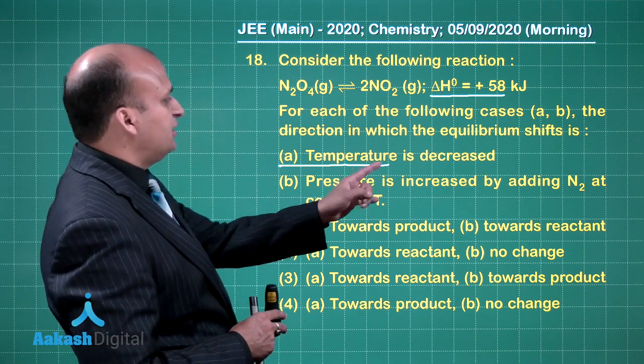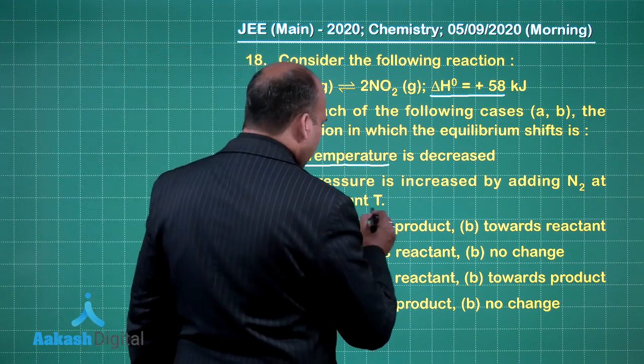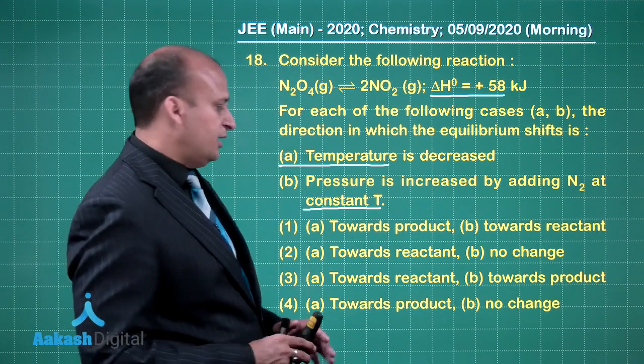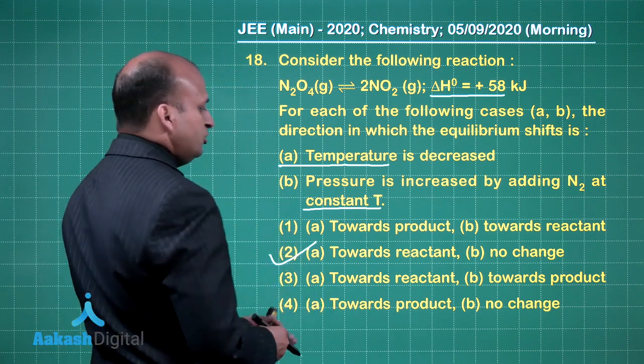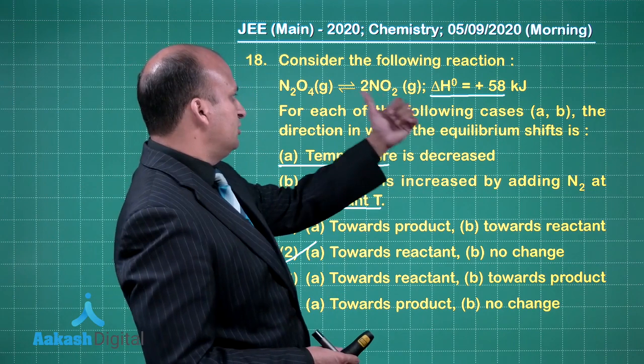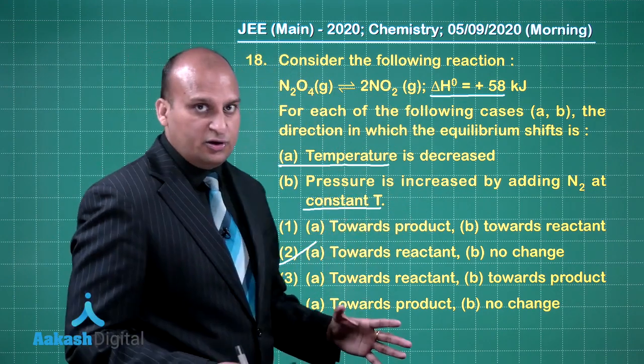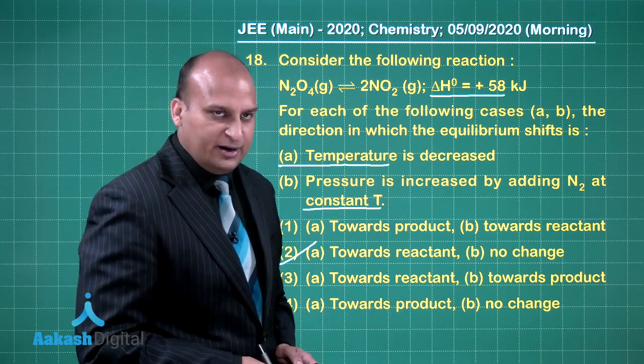Now second is pressure is increased by adding nitrogen at constant temperature. See you are keeping the temperature constant. So at constant volume, if you increase the pressure, there is no effect on the reaction. So no effect means no change. So the right answer is 2. In the first case, it is moving towards reactant because of decrease in temperature. In the second case, pressure is increased at constant volume. So there is no change on this particular equilibrium.